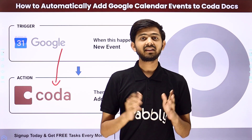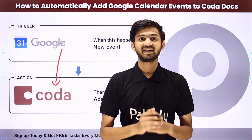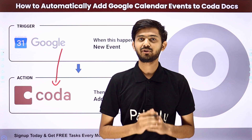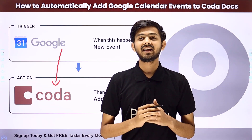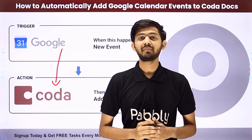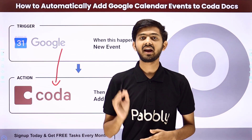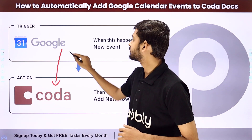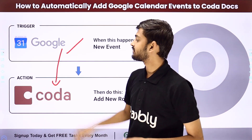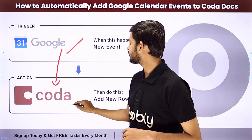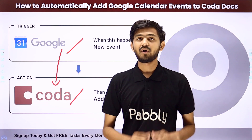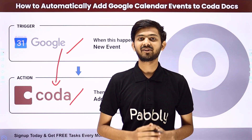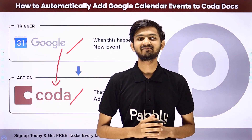For creating this integration, we are going to use Pabbly Connect, which is an amazing software for automation and integration. In Pabbly Connect, I am going to use Trigger and Action. In the Trigger application, I am going to use Google Calendar, and in the Action application, I am going to use Coda. Let me take you to my computer screen.